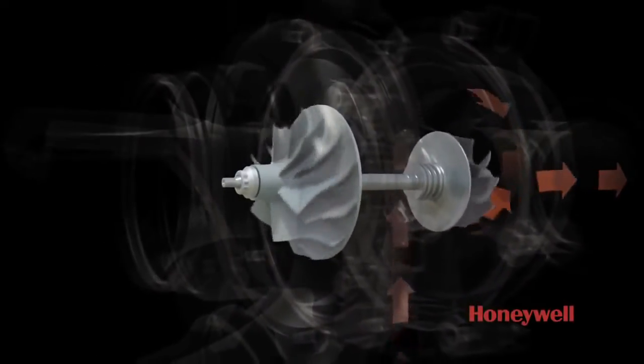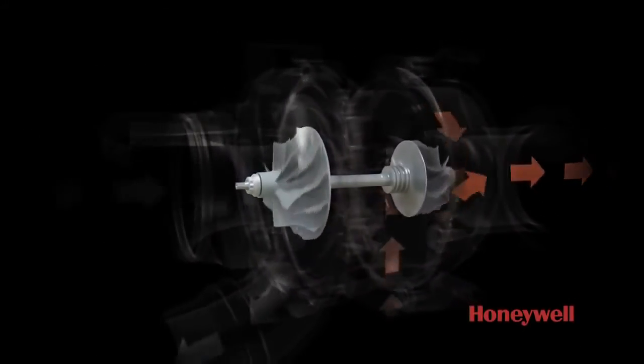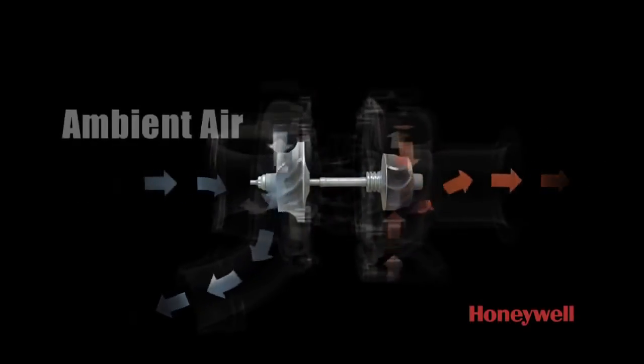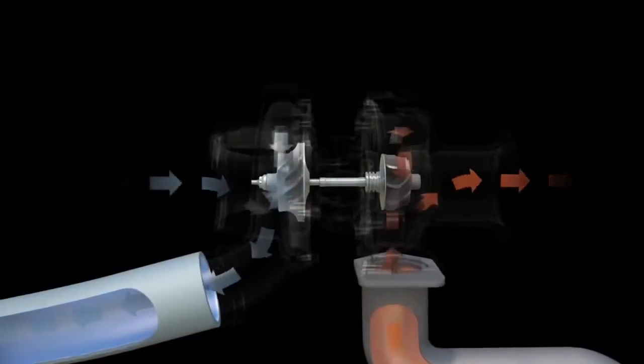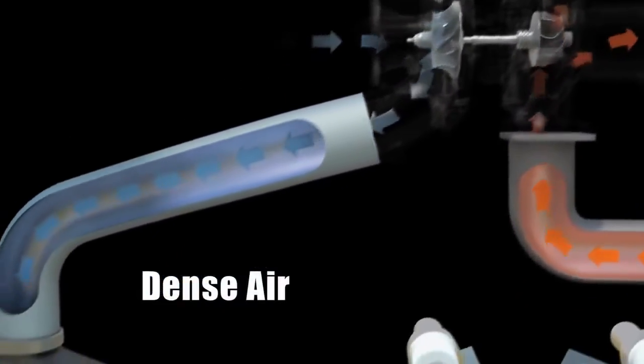These two wheels turn together, and the rapid spinning allows the compressor to suck in large amounts of ambient air and compress it. As a result, the air is very dense and has a higher temperature.